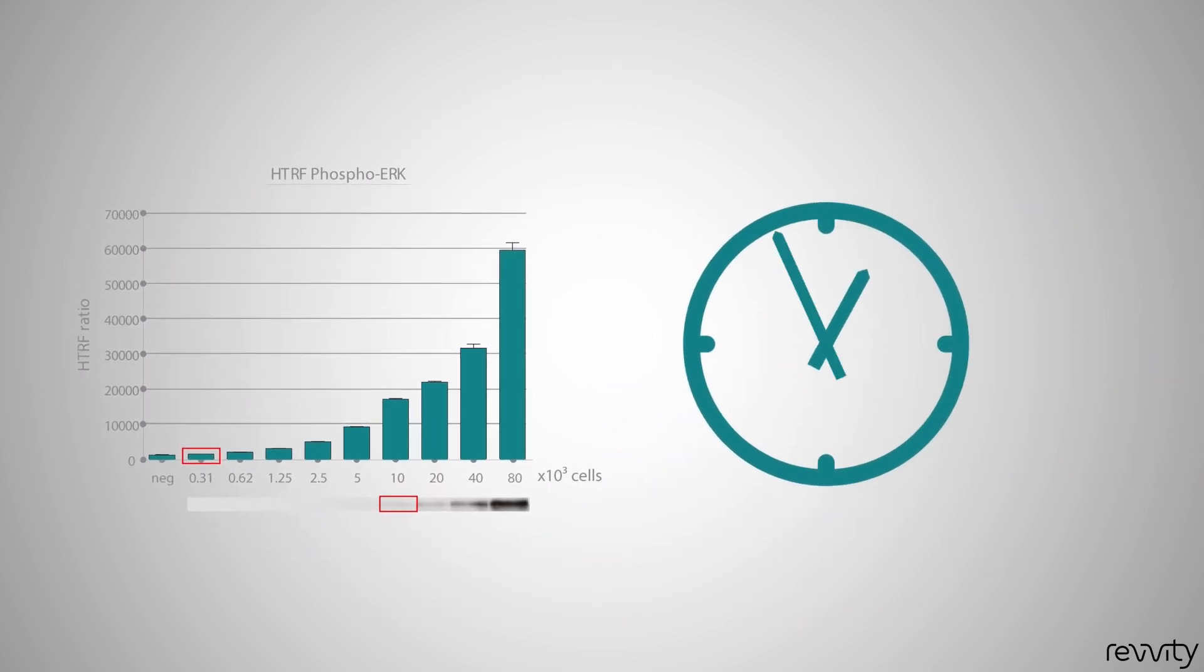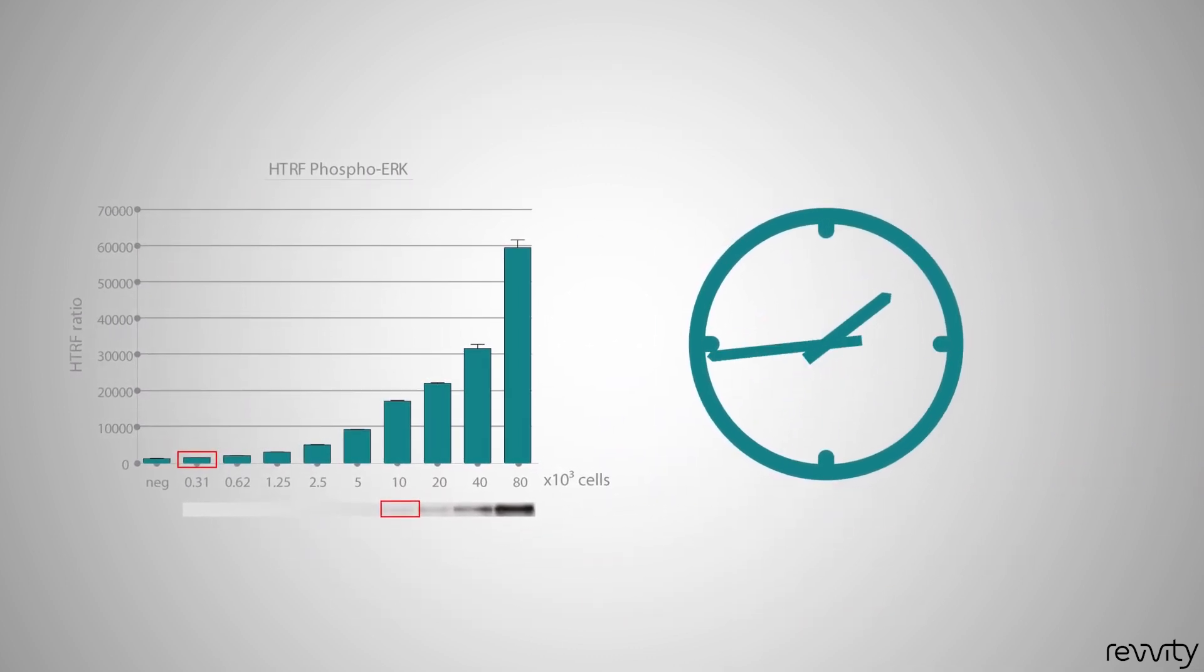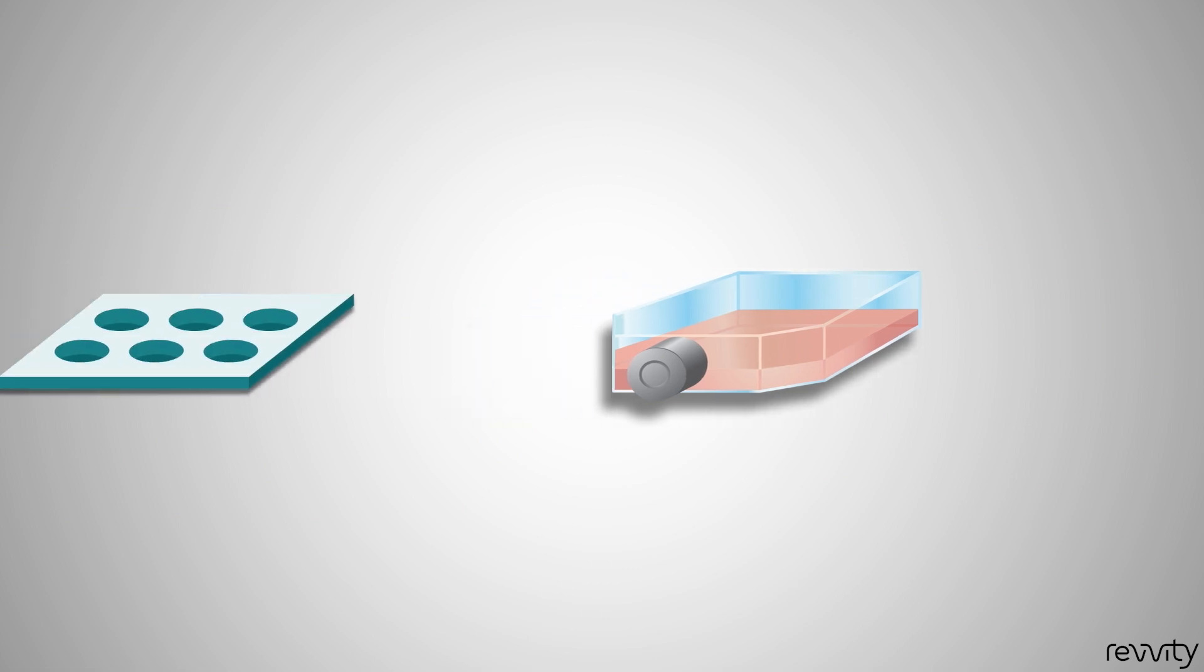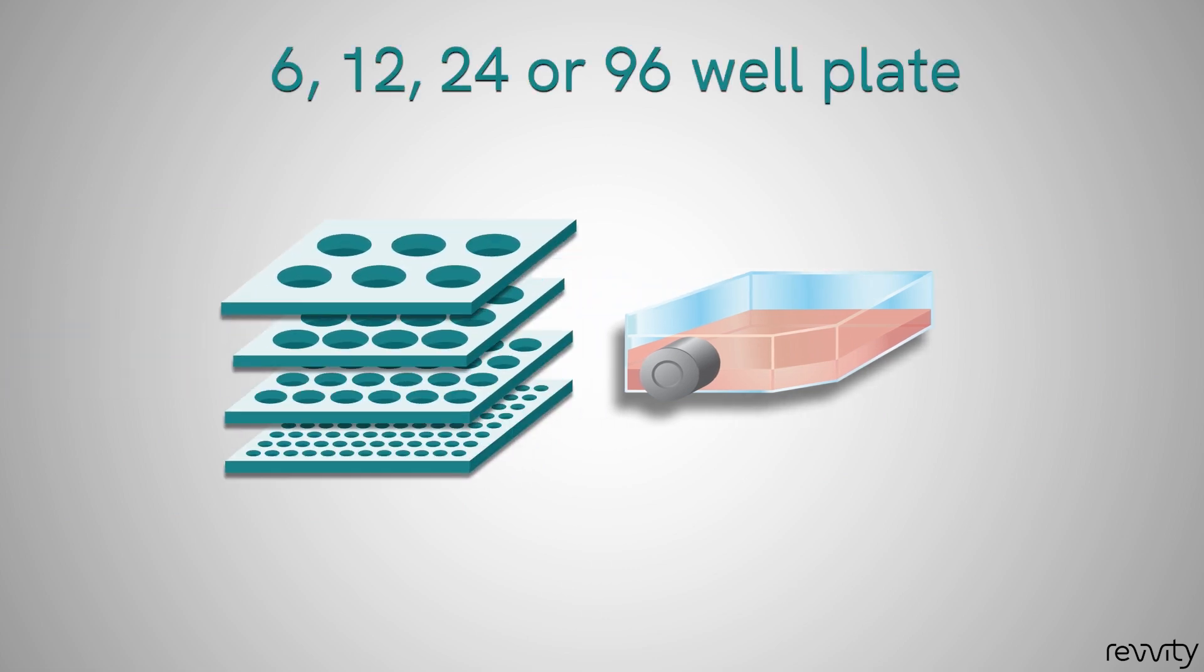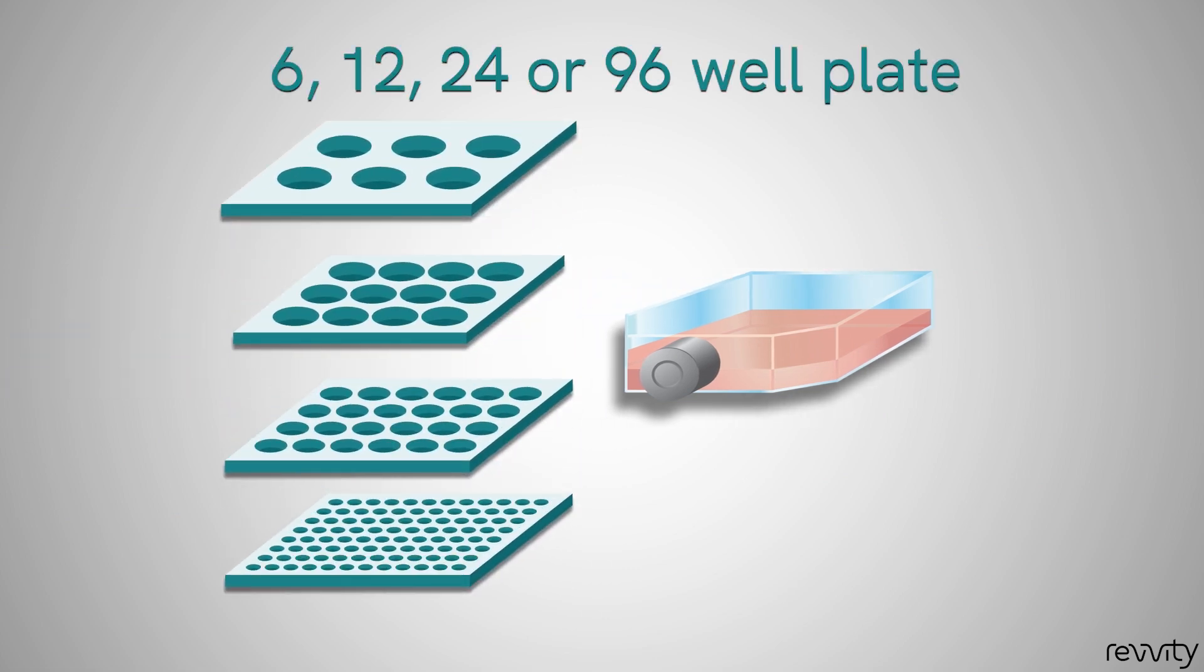It can work on adherent or suspension cells so you can start your culture in any format like a flask, a 6, 12, 24, or 96-well plate.